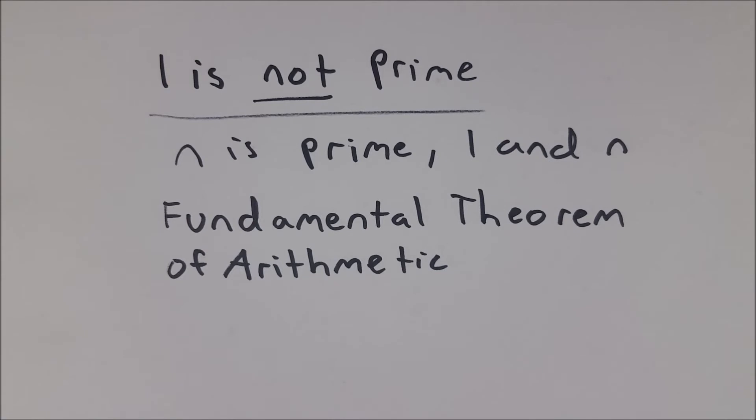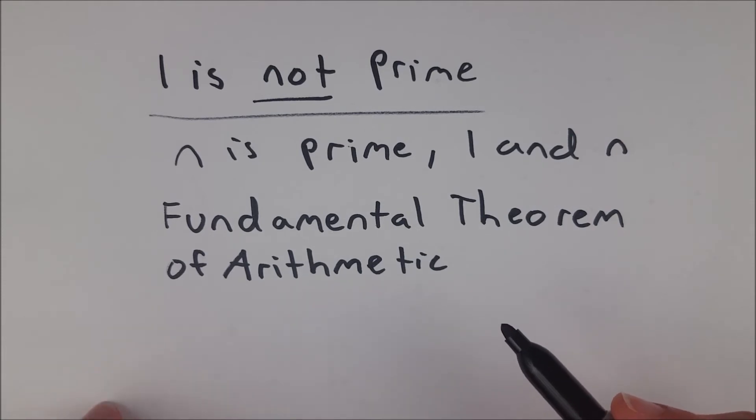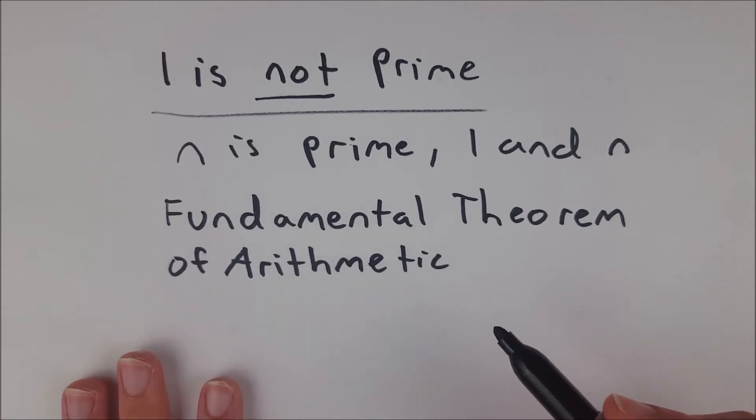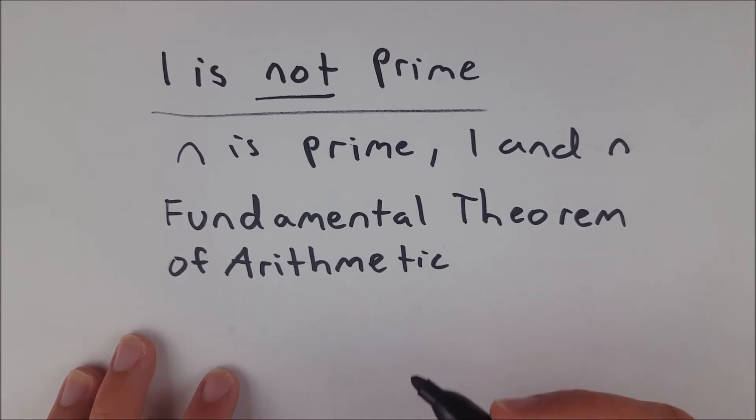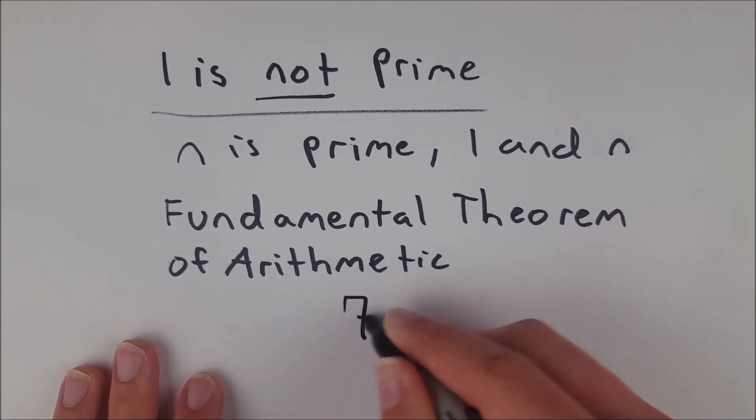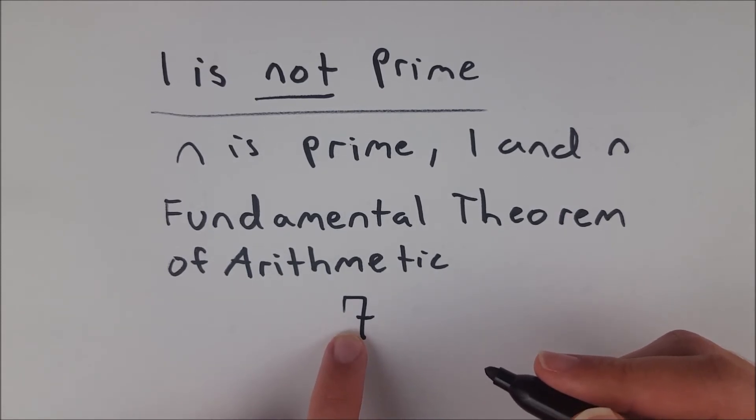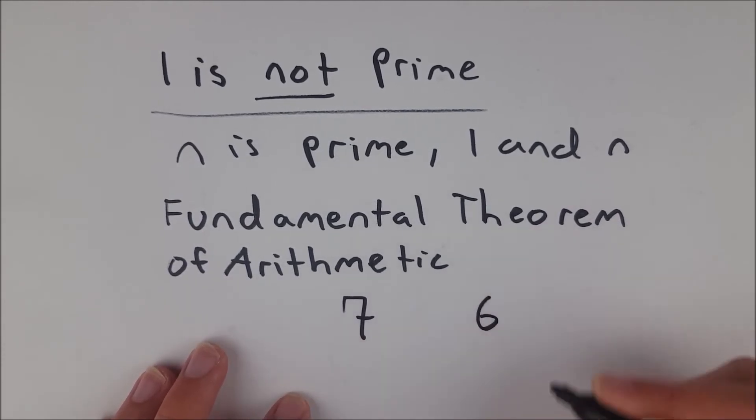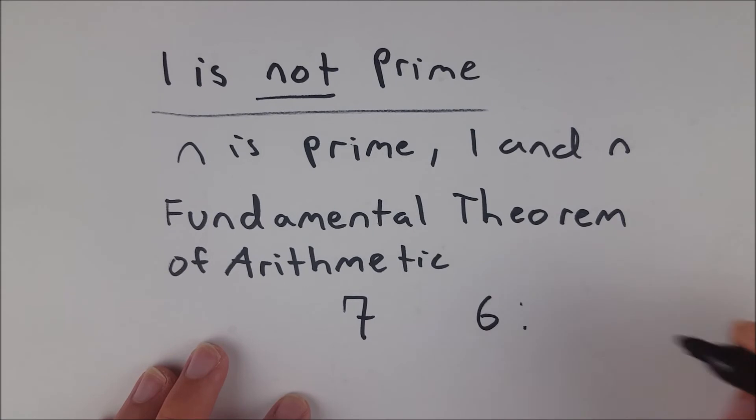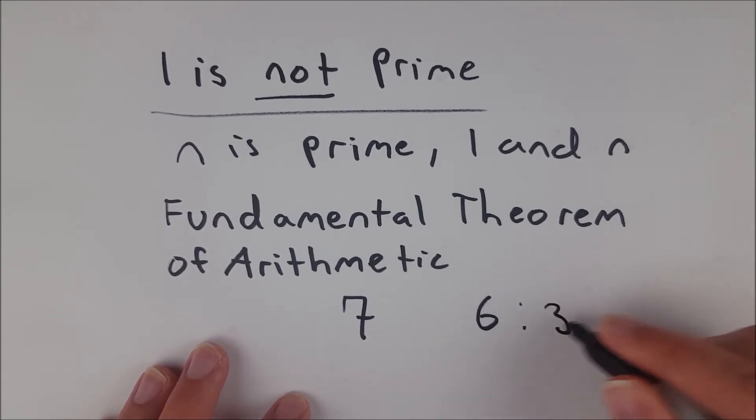The Fundamental Theorem of Arithmetic goes by a few other names, like the unique prime factorization theorem or the prime factorization theorem. What it says is that every integer greater than 1 is either prime, or it has a unique prime factorization. For example, you pick a number like 7, that's an integer greater than 1. It's either prime, or it has a unique prime factorization. In 7's case, it's prime. But if you look at a number like 6, 6 is not prime, and it has a unique prime factorization, namely 3 times 2.